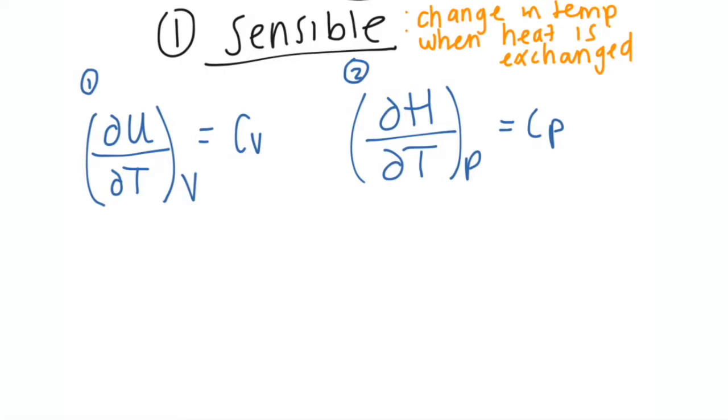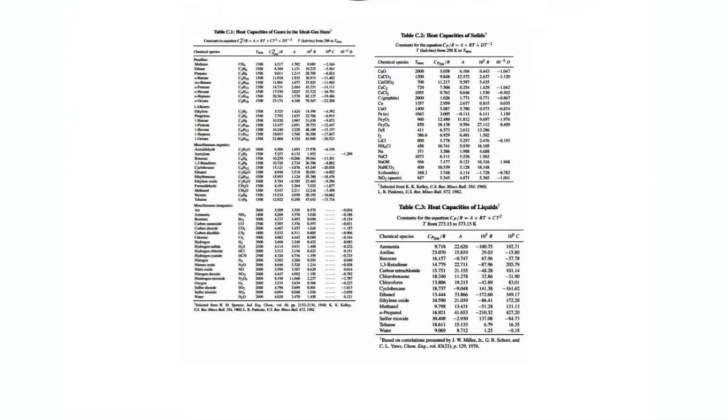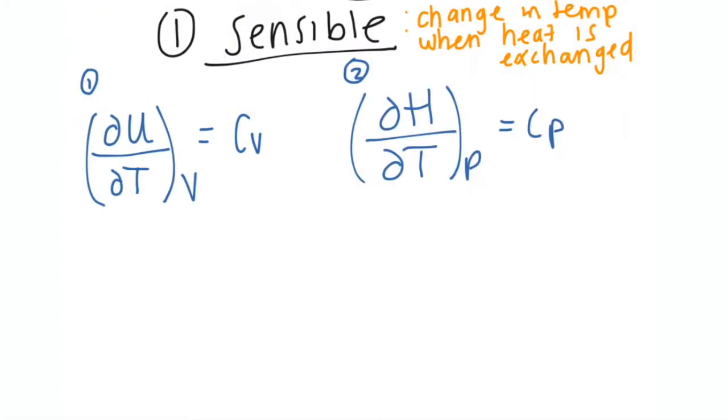In this class, you're going to be seeing different models for heat capacities, and those models are going to be based on the tables that you're given. The tables that you will be given are here. For example, if you look up here for heat capacities of gases in ideal gas state, your heat capacity correlation is going to be the following. You'll be given heat capacity correlations in your tables. For example, the one for ideal gas.